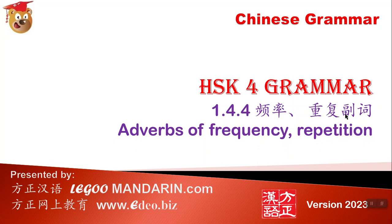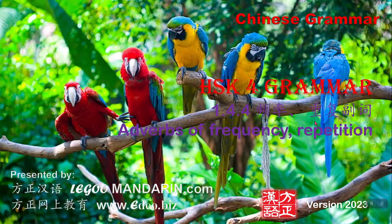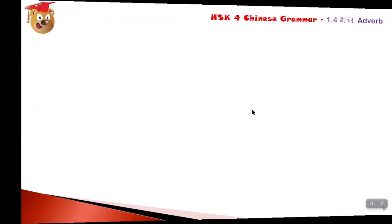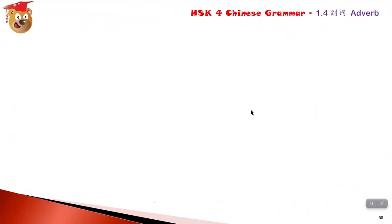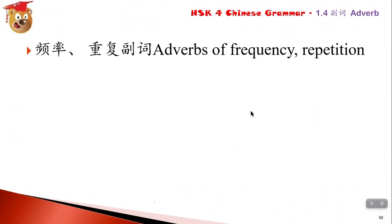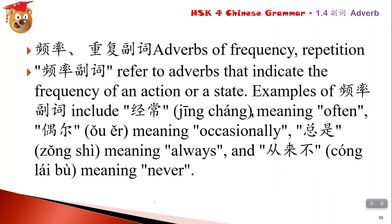频率重复副词 - these are adverbs that describe frequency or repetition. Examples include: 经常 (often/always), 总是 (always), 偶尔 (occasionally), and 从来不 (never). There are also repetition adverbs like 一再 and 再三.